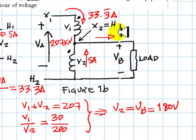But when we do that, the current in the load is going to be according to a KCL equation in this node, 38.3 amps.